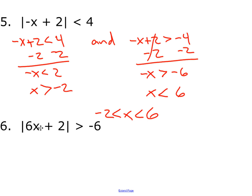Number 6. When is an absolute value greater than a negative number? Since an absolute value always makes things positive, no matter what's inside, it will always be greater than a negative number. So this would be all real numbers.